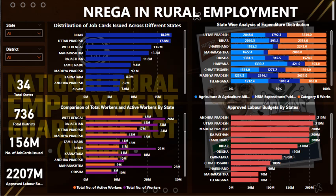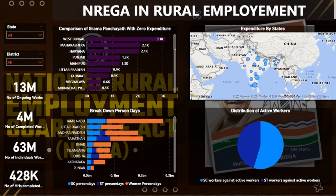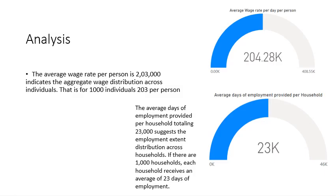This is one of the dashboards. It includes the distribution of job cards across different states, state-based analysis of expenditure distribution, comparison of total work and active workers, approved labor budgets, comparison with zero expenditure, and expenditure by states.